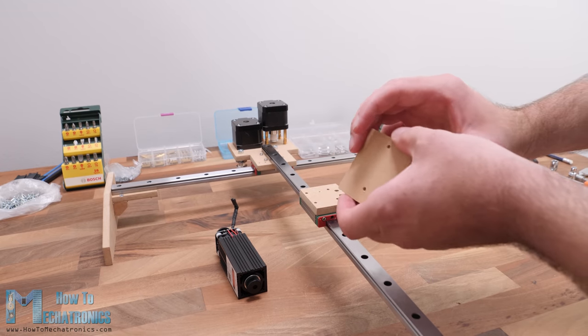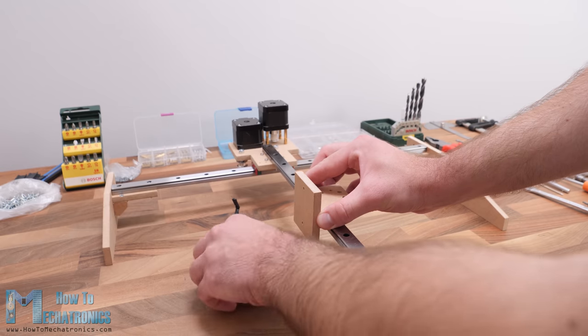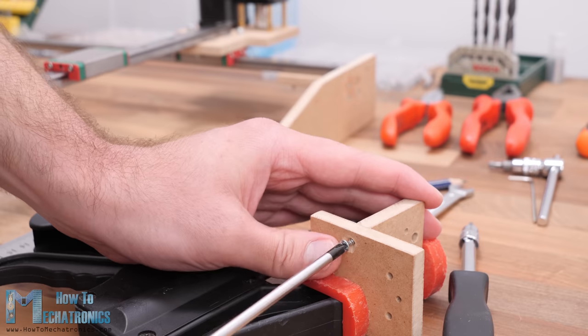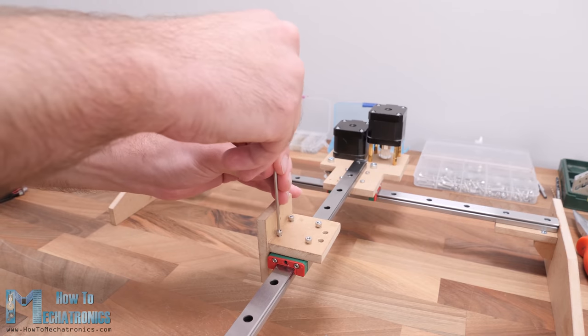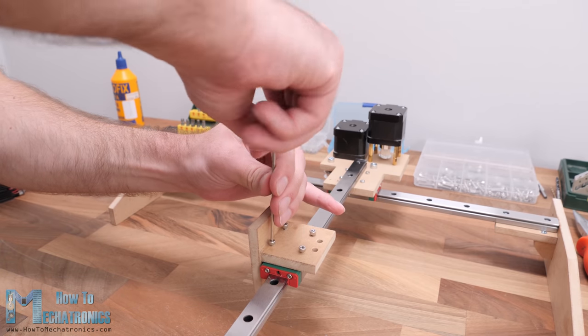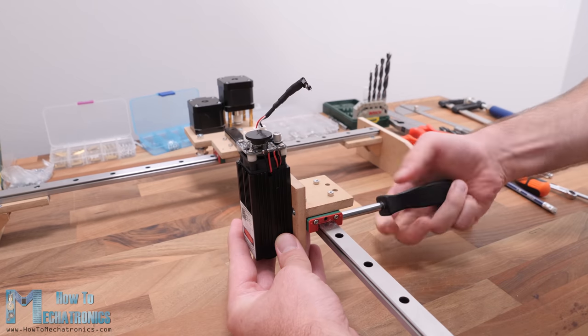Next, we can install the parts which go on the Y axis sliding block and actually hold the end effector or the laser module in this case. Using the method shown earlier, I assembled the parts and secured them to the sliding block using four M3 bolts. Now we can secure the laser module in place with two M3 bolts.